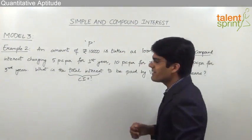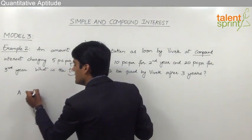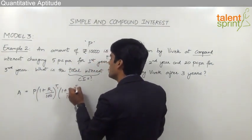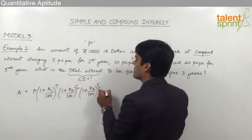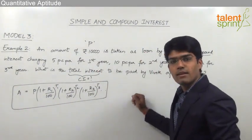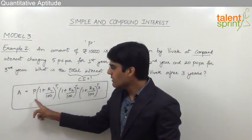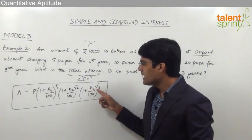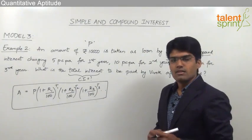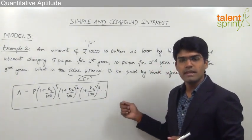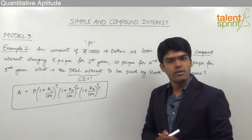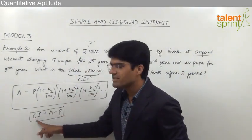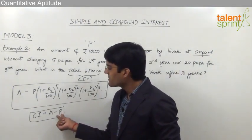Going by the formula for varying rates of compound interest, the total amount is: A = P × (1 + R1/100)^T1 × (1 + R2/100)^T2 × (1 + R3/100)^T3, where R1, R2, R3 are the rates for periods T1, T2, T3 respectively. From this total amount, subtracting the principal gives the compound interest, since CI = Amount − Principal.